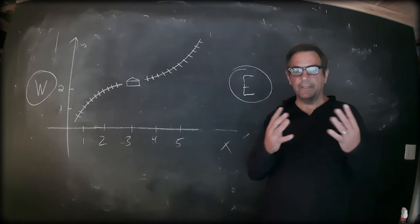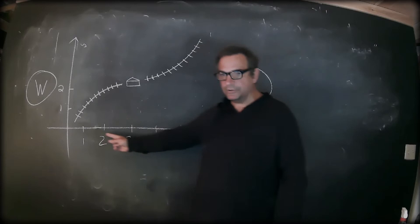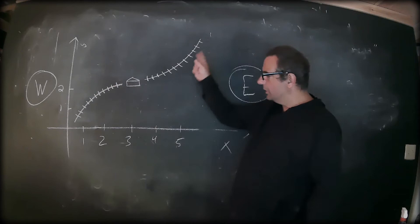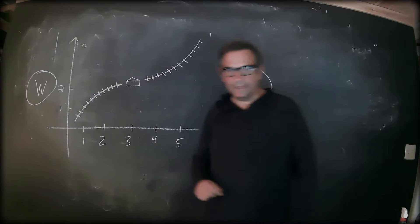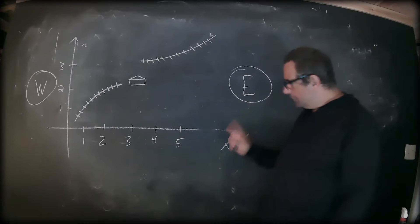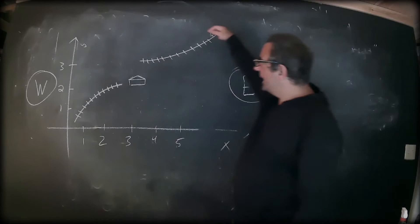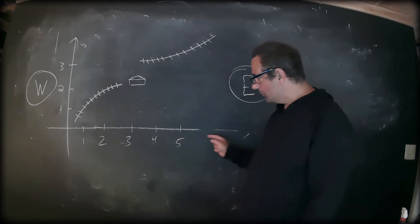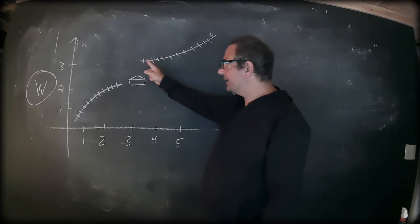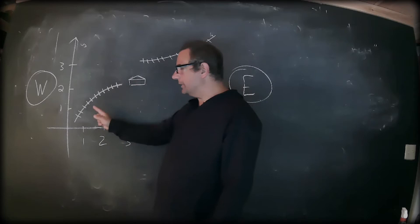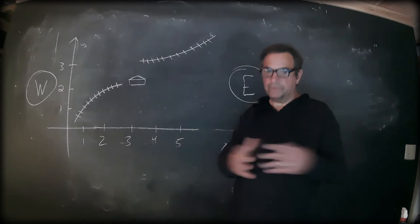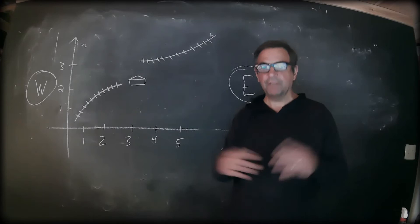Sometimes things go wrong. In this second example, as we approach a longitude of three from the right, we're going to a latitude of three, whereas we're still approaching a latitude of two from the left. For a functioning railroad, this is highly problematic — the people at the station have no idea what to do.